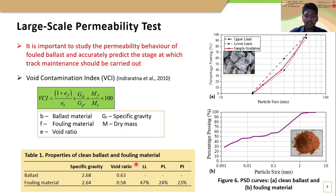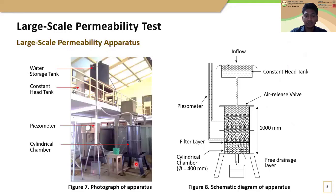Based on these properties, the fouling materials can be categorized as sandy clay. This slide shows a photograph and a schematic diagram of the large-scale constant head permeability apparatus which was designed and built to study the permeability behavior of ballast. The major components of this apparatus are a water storage tank, constant head tank, piezometer, and cylindrical chamber where a test specimen is placed. The total height of the cylindrical chamber is 1 meter and the diameter is 400 mm, which can accommodate a granular specimen up to a height of 800 mm. The dimensions of the chamber are more than enough to avoid the effect of sample size for ballast aggregates.